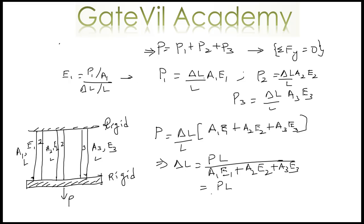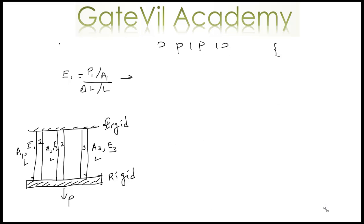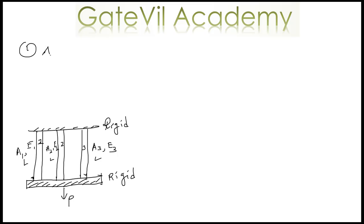So the change in length delta L will be equal to PL divided by (A1 E1 plus A2 E2 plus A3 E3). We can write this in a generalized form as: delta L equals PL divided by summation of Ai Ei for all i.